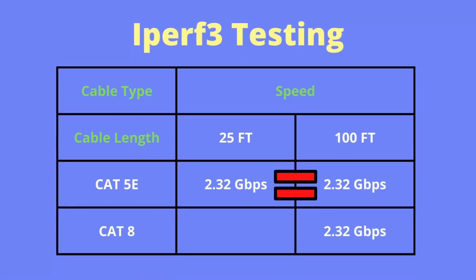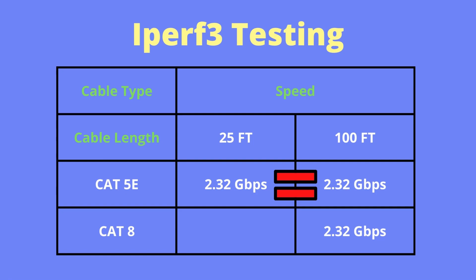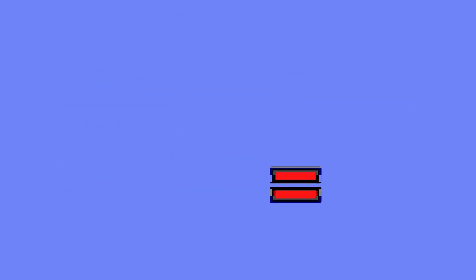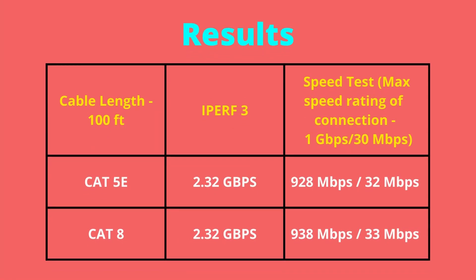The previous video had shown that Cat 5e is good enough at 2.5 gigabits per second, but there were some doubts on the length of the cable used. However, in today's test with 100 feet of cable, the same results were present. Cat 6 was not tested, as it more than likely would have given the same results.